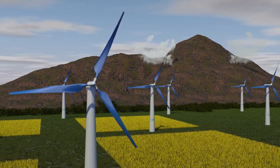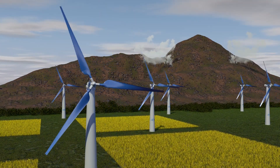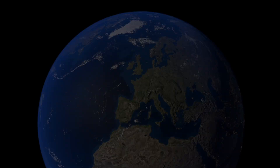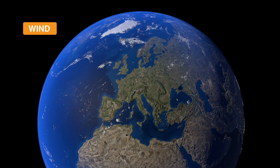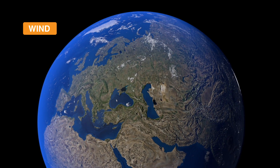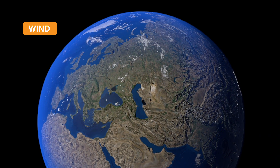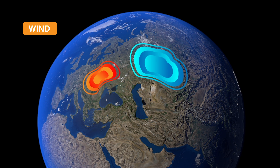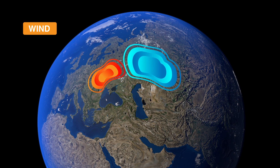Wind turbines are devices that convert the wind's kinetic energy into electrical energy. We can simply describe the wind as moving air, caused by differences in atmospheric pressure between different regions of our planet. Differences in atmospheric pressure arise as a result of temperature differences. When the air moves from a high-pressure region into a low-pressure region, we feel the moving air as wind.